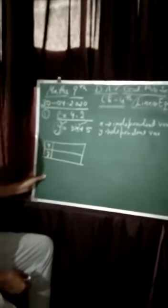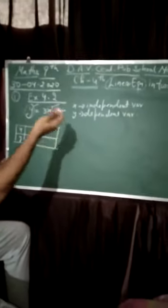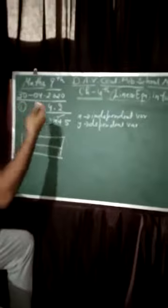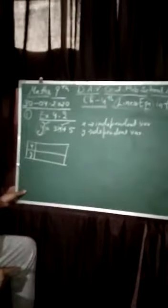What is the meaning of independent and dependent variable? x is independent. In that condition, we put the value of x and we get the value of y.